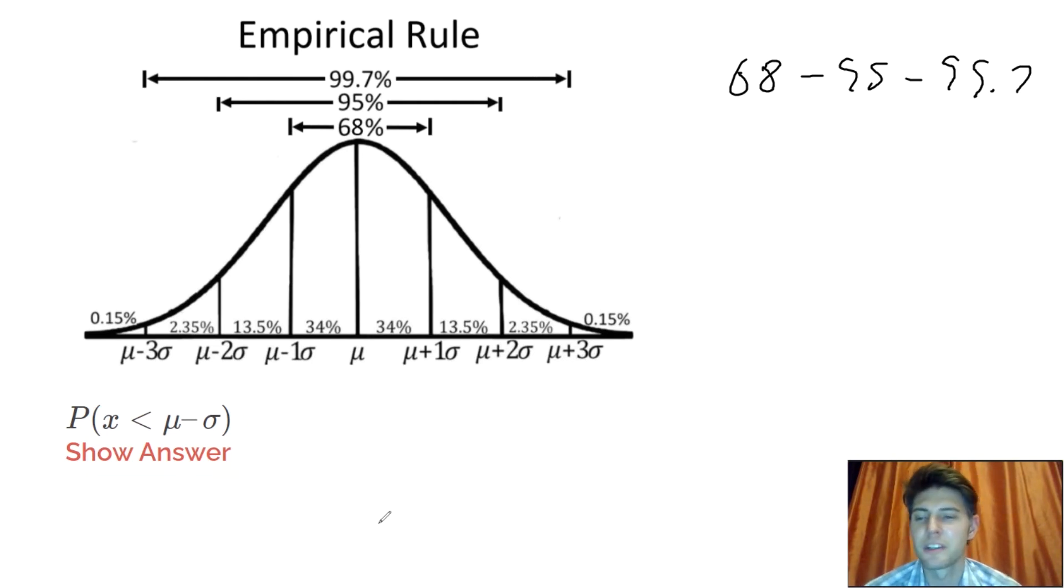This question is asking, what is the probability that x is less than mu minus sigma? So less than mu minus sigma, this right here is the mu minus sigma. And we want to know, what is the probability that's less than it? So we're basically being asked, what is the probability of this stuff right here?